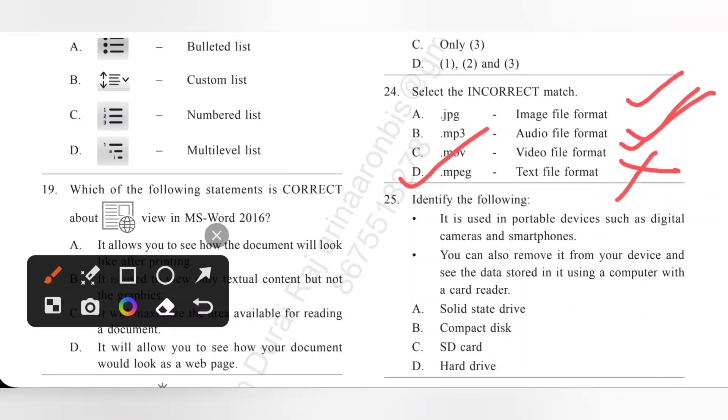Next 25, identify the following. It is used in portable devices such as digital cameras and smartphones. You can also remove it from your device and see the data stored in it using a computer with a card reader. What is this? It is SD card - secure digital card. Option C is the correct answer.